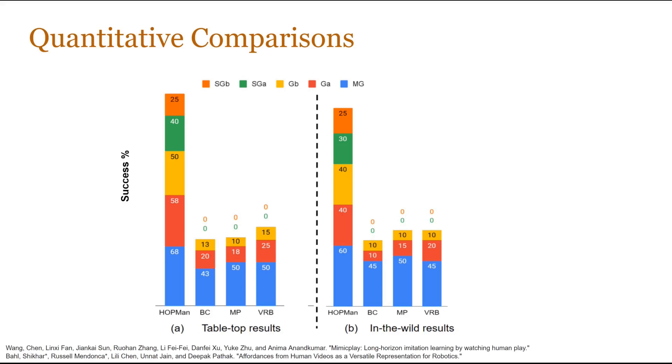Compared to approaches like IMP and VRB that use human videos for predicting latent skills and visual affordances, HOPMan achieves much higher success rates indicating the benefits of predicting a temporal human plan.